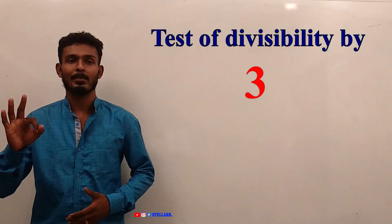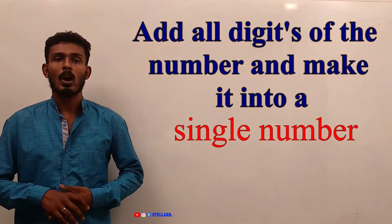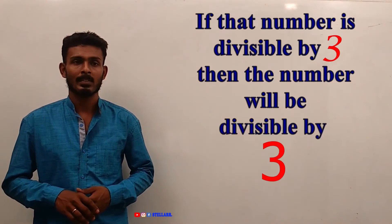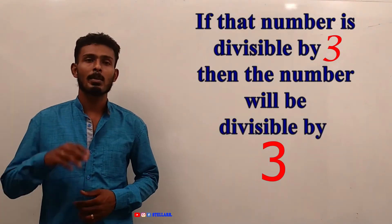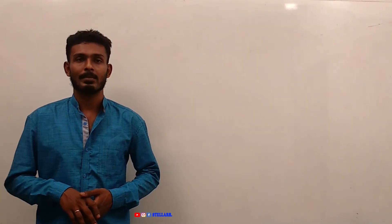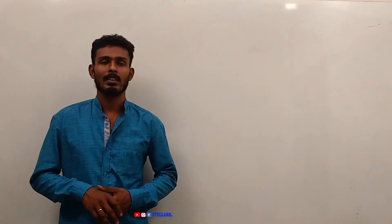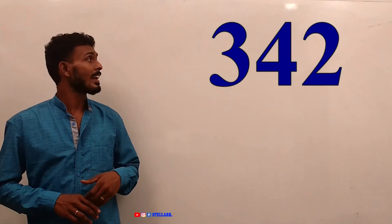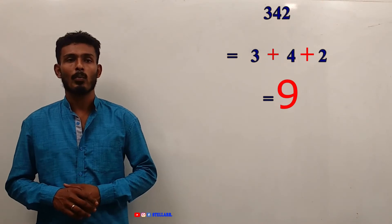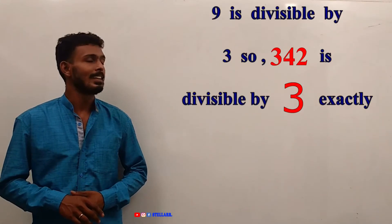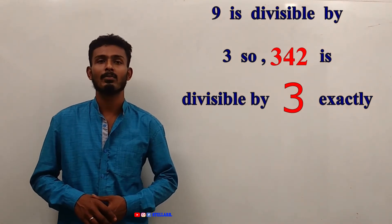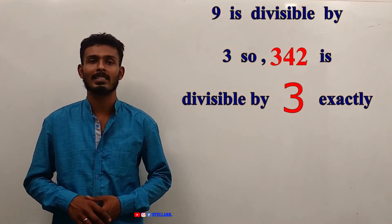Test of Divisibility by 3. For that, you have to add all the digits of the number and reduce it to a single number. If that number is divisible by 3, then the original number will be divisible by 3. Let's take the number 342. When 3 is added with 4 and 2, we get 9. Since 9 is divisible by 3, the number 342 is exactly divisible by 3.